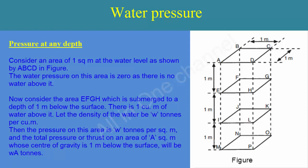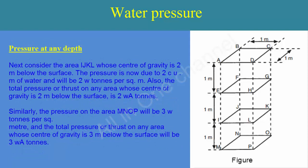Next, consider the area IJKL, whose center of gravity is 2 meters below the surface. The pressure is now due to two cubic meters of water and will be 2W tons per square meter. The total pressure or thrust on any area whose center of gravity is 2 meters below the surface is 2W·A tons.